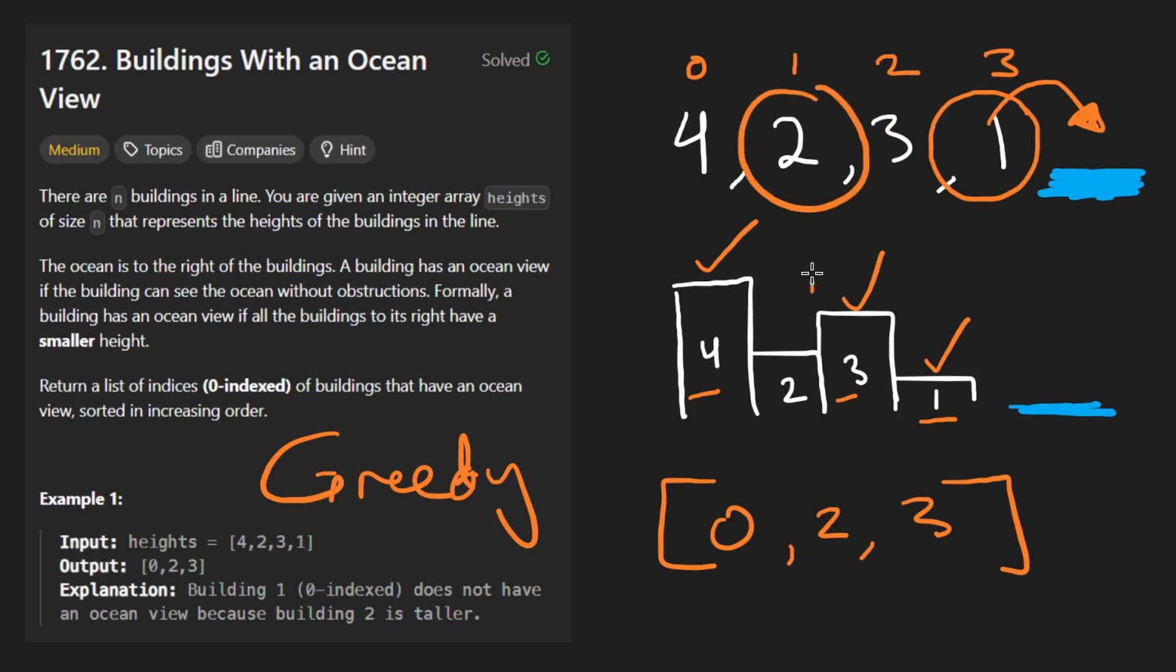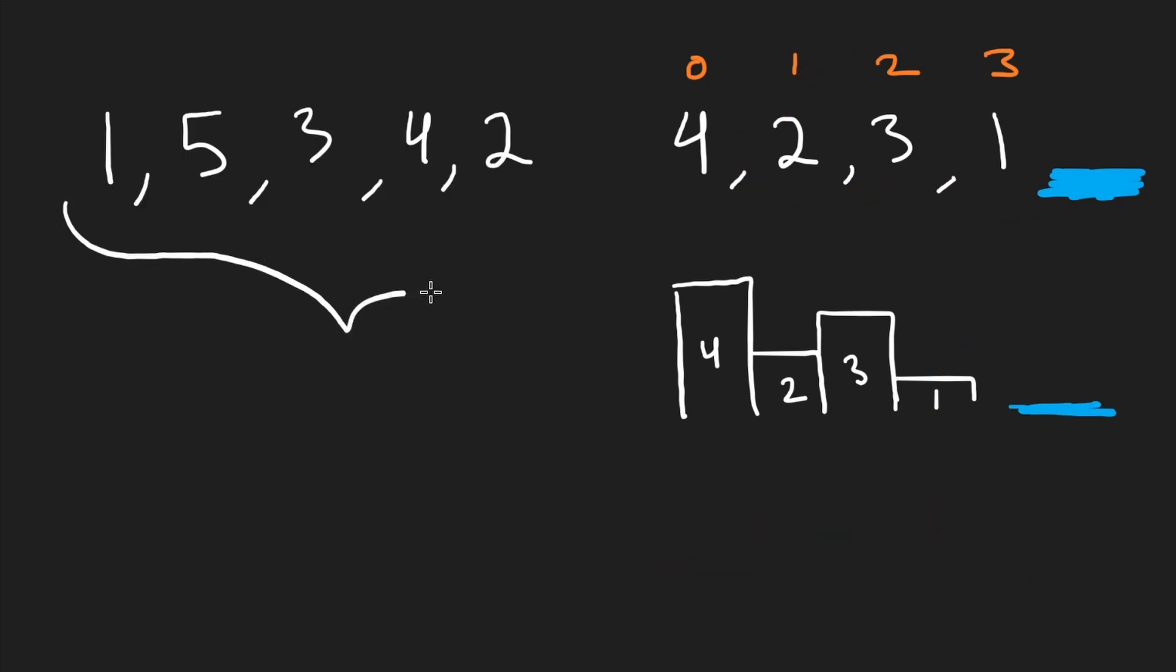Because for any given building, we just want to know what's the tallest building to the right of it, because that's what's going to allow us to determine if this building can actually see the water or not. Let's make this more clear. This is my array over here. We're going to iterate through this in reverse order. Let's say this one starting here, and let's say we have our output array. I'm just going to initialize that empty, but we're going to actually initialize that with the last element.